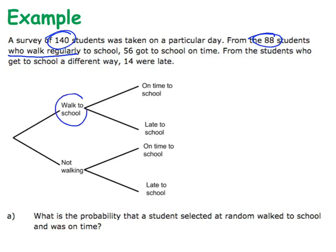We're talking about walking to school — there are 88 out of 140 students that walk to school. If I know that the totals have to add up to 140, then 140 take away 88 gives me the number of students that did not walk to school, and that is 52.